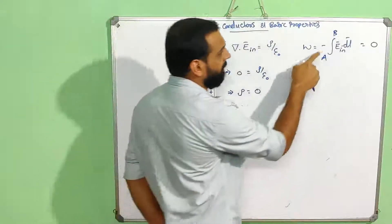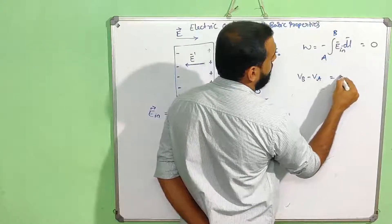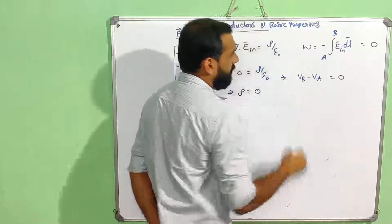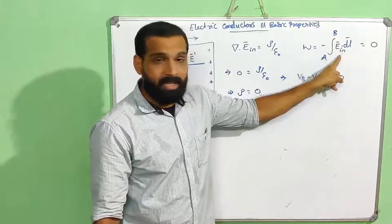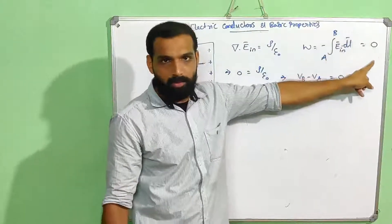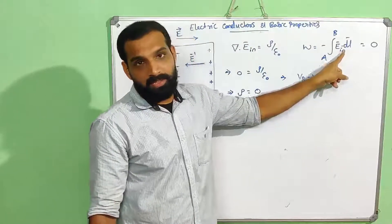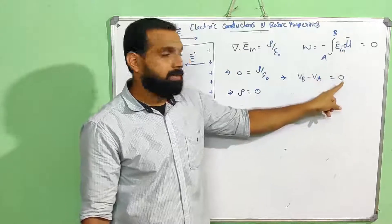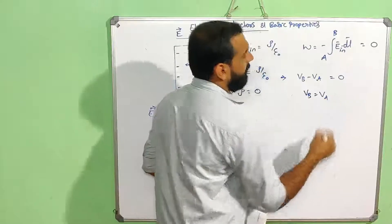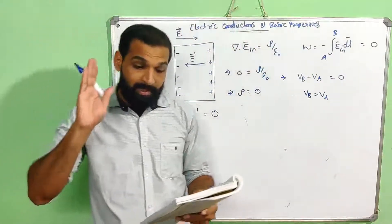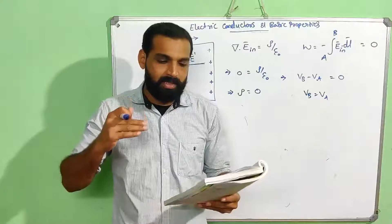The integral of E dot dL equals zero, which gives us V_B minus V_A equals zero, meaning V_B equals V_A. Therefore, the potential inside a conductor is a constant.